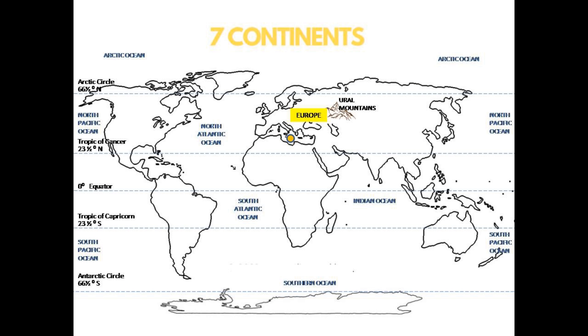This is Europe. It's smaller than Asia and surrounded by water on all sides. It has the Arctic Ocean in the North, Atlantic Ocean at the West, and Mediterranean Sea, Black Sea, and Caspian Sea towards itself.